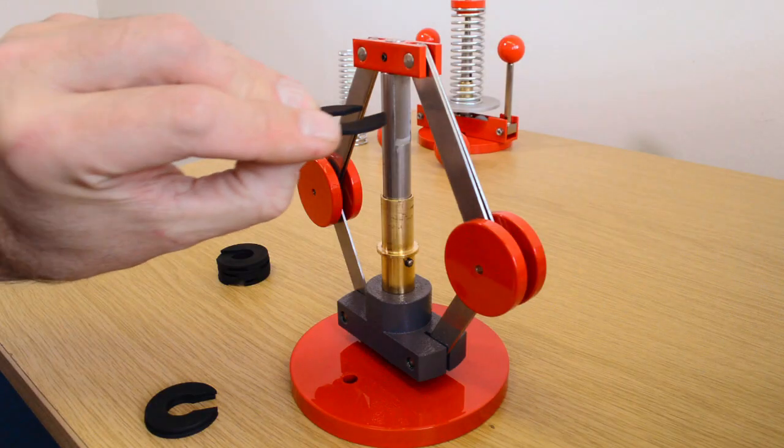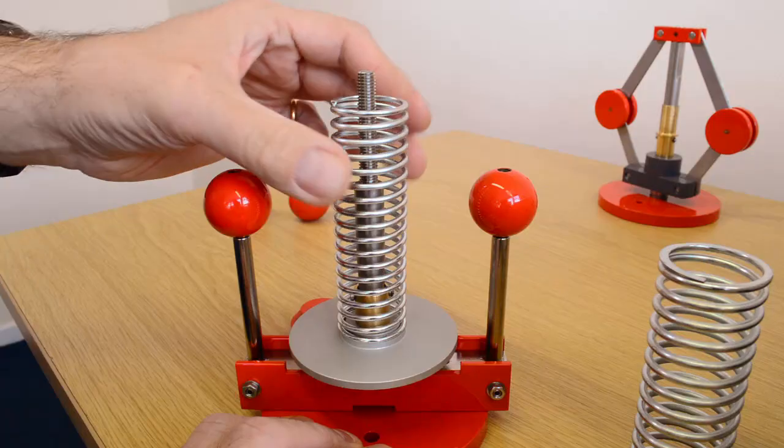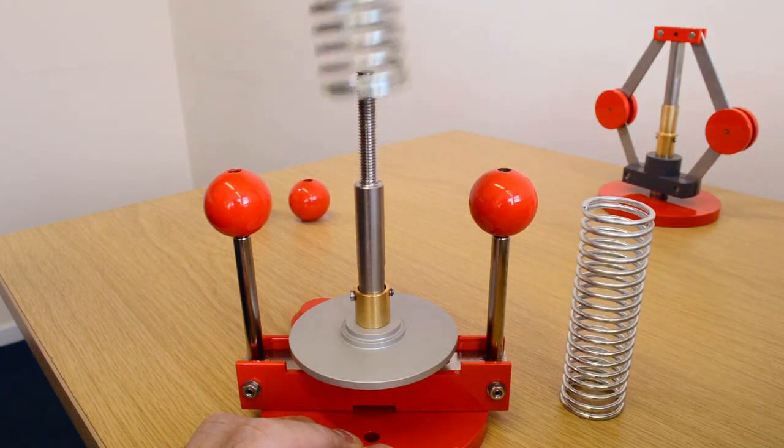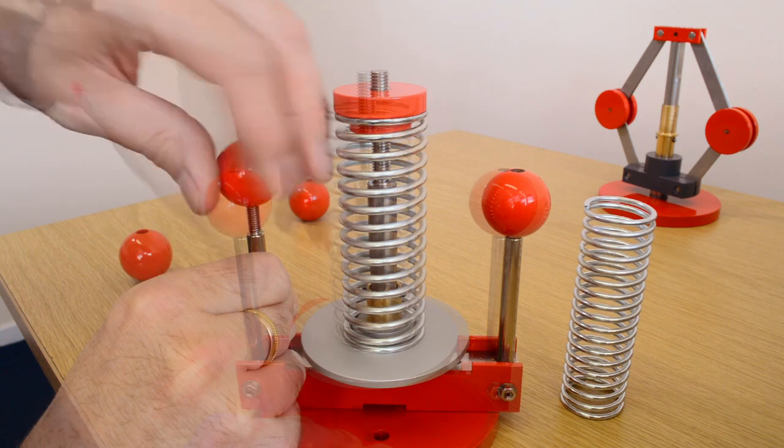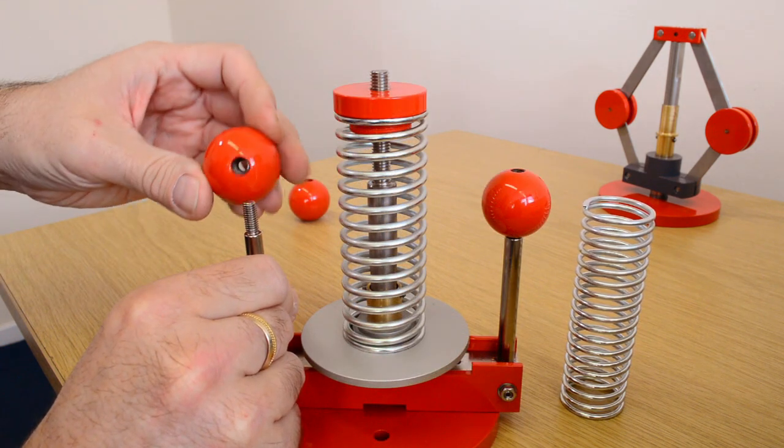Additional supplied weights allow the user to vary the mass of the sleeve of the Porter and Proel governors. Additional supplied springs allow the user to vary the spring rate of the Hartnell governor. Users may also adjust the arm length and rotating mass of the Hartnell governor.